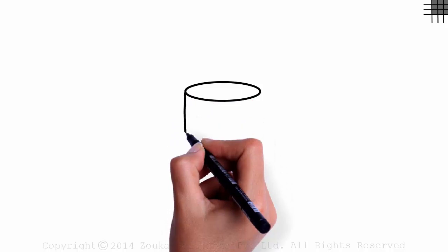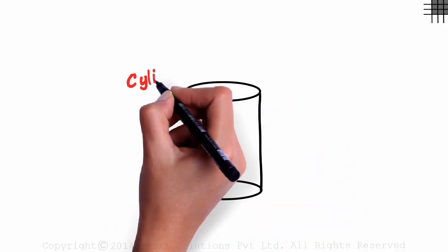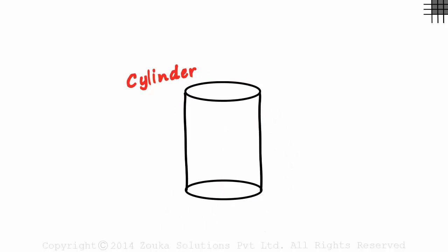A circle, a curved surface, and another circle. This is a cylinder. A right circular cylinder to be precise.